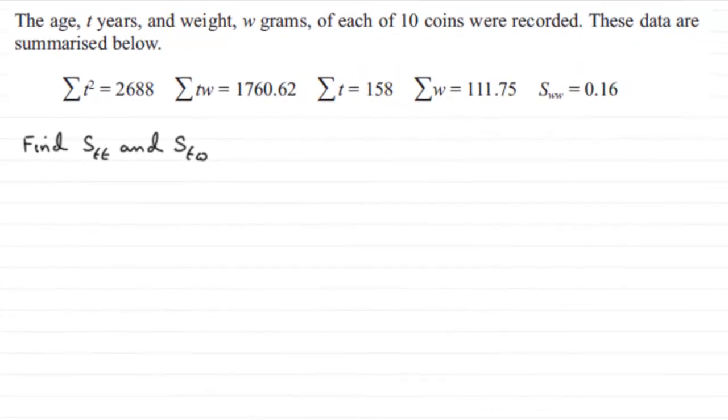Now for this first part of the question, we're given the age T in years and the weight W in grams of each of 10 coins. We've got the data summarized in the summary statistics, and we've got to find STT and STW.